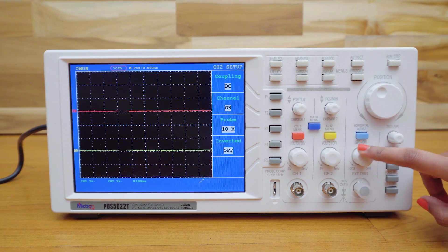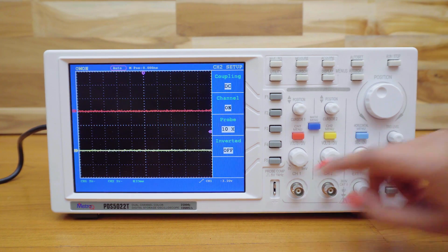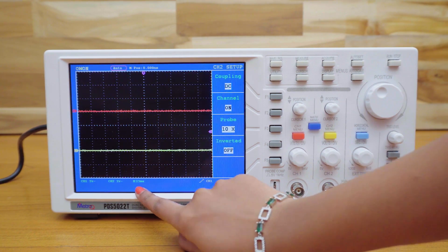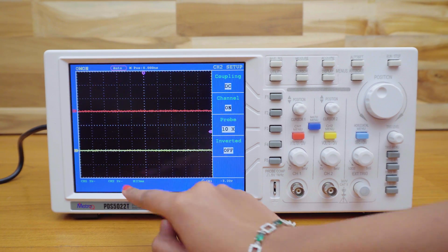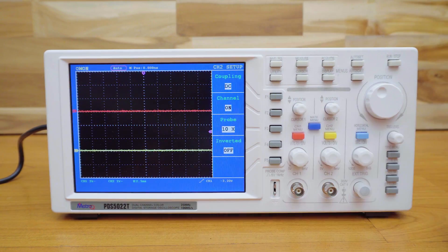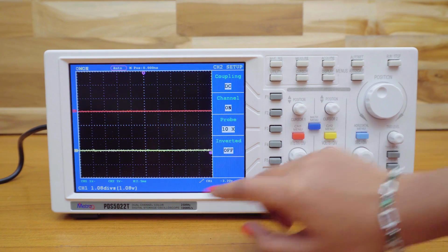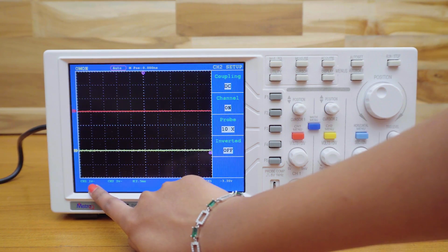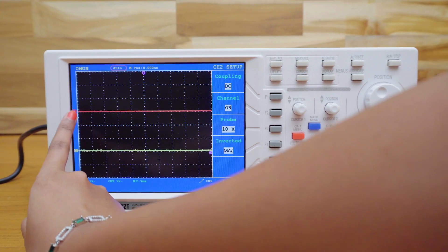This knob is for time or seconds per division. It adjusts the horizontal sweep frequency of the oscilloscope. Here on x-axis, each division represents the time. Here is the volts per division setting of channel 1. You can see the units on the display. Each division on the screen shows the amplitude level of the signal.